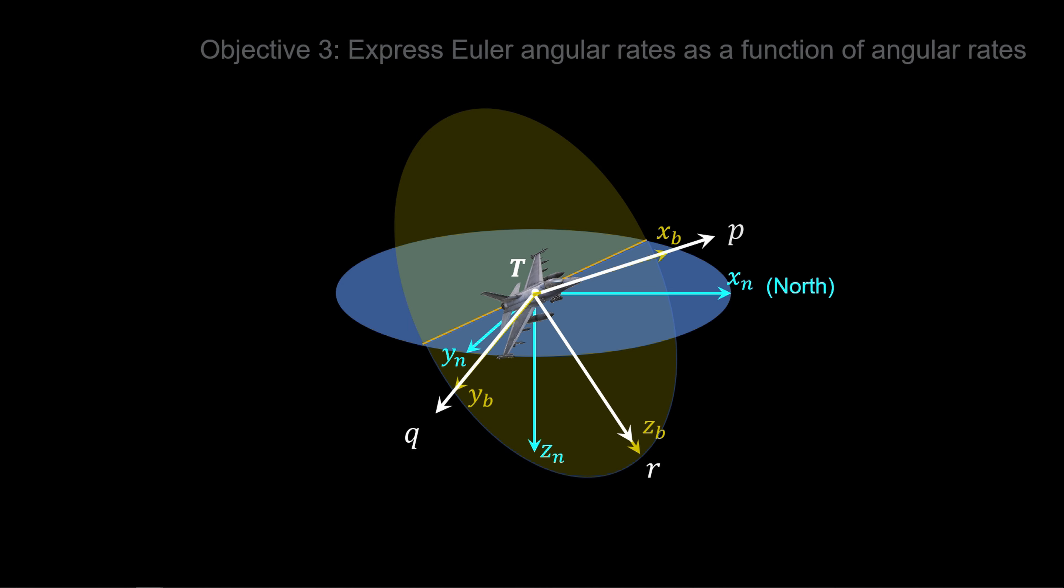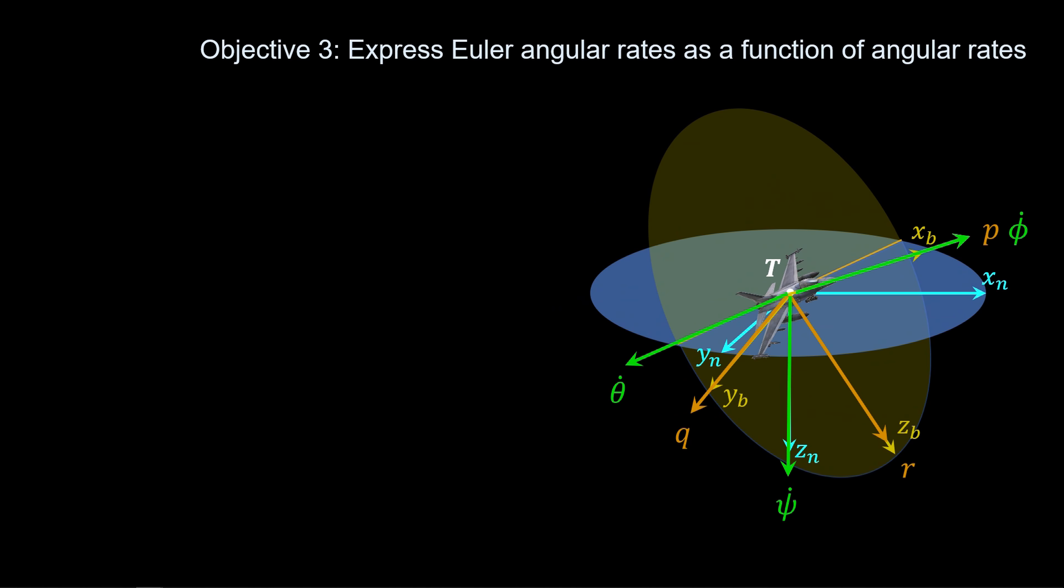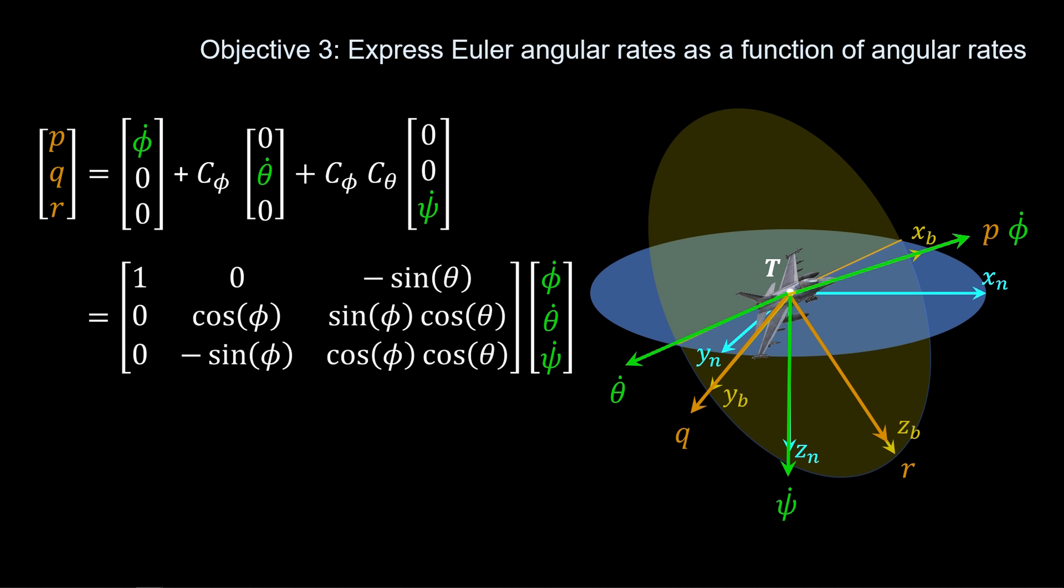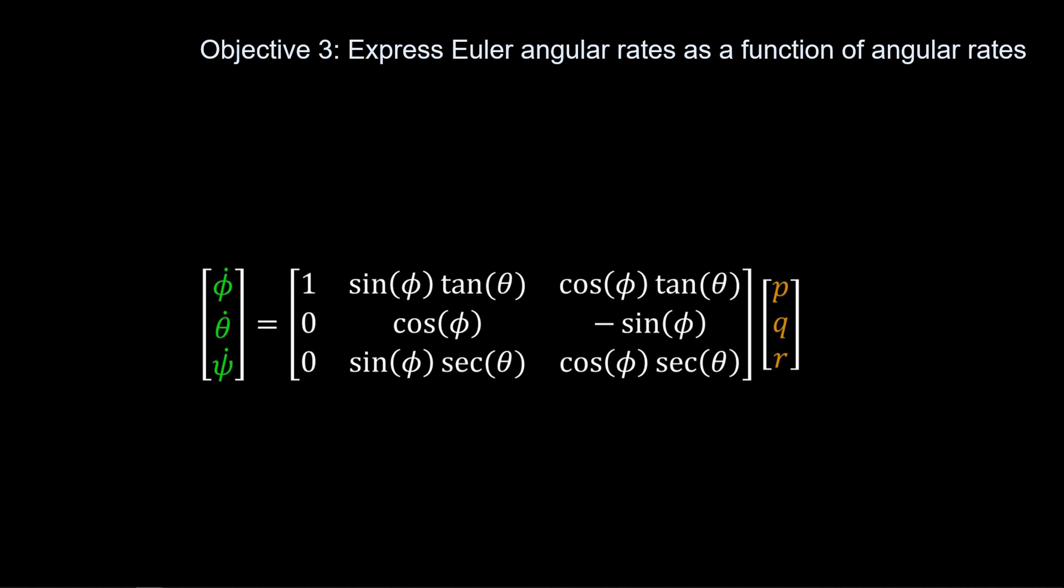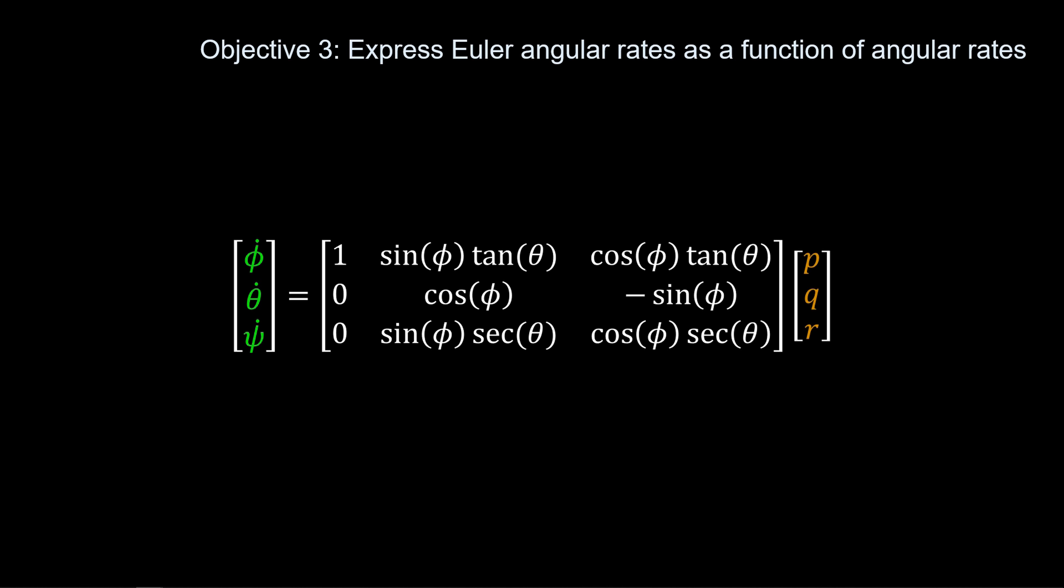We'll get to the Euler kinematic equations by expressing Euler angular rates as a function of body angular rates. Here we have our angular rates in the body coordinate system. We can write this as a matrix times the Euler angular rates. And we can invert this matrix to solve for the Euler rates in terms of the body angular rates. Our result is a set of three nonlinear differential equations. What is the state of this set of equations? Of course, it's the Euler angles phi, theta, and psi. And they're related to the body angular rates through the instantaneous pitch and roll angles contained in the matrix. These are the Euler kinematic equations. Our third objective is complete.